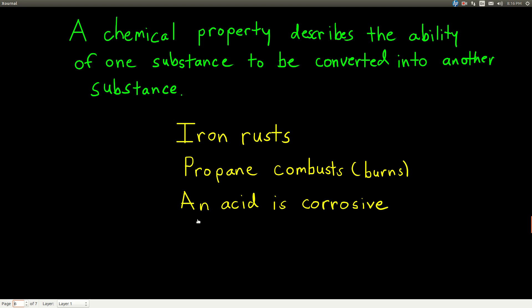And acid, an acid is corrosive. If you put acid on some metals, you'll dissolve the metals. But in that process, the acid becomes a different substance.